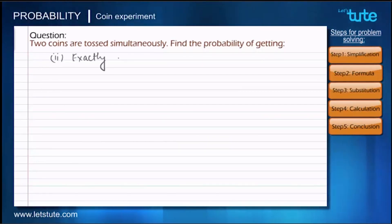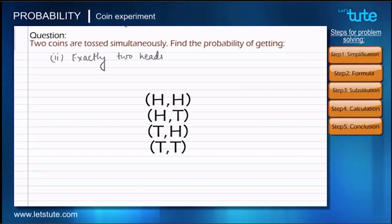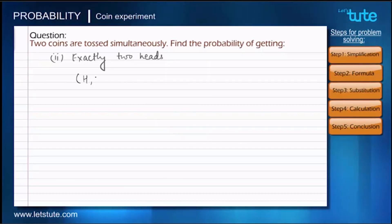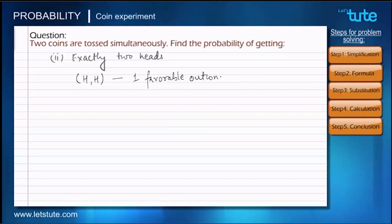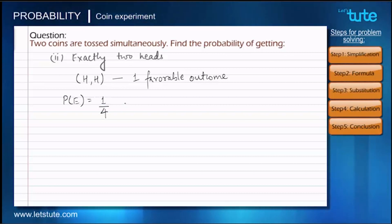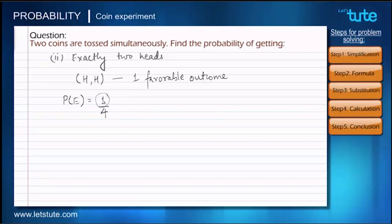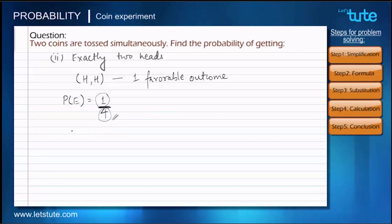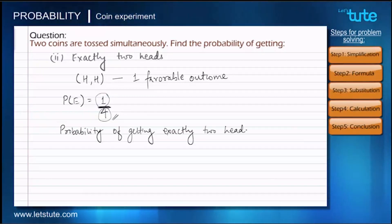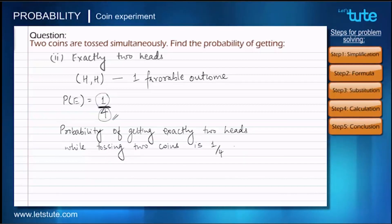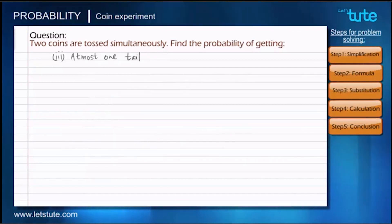The second sub-question is to find the probability of getting exactly two heads. Out of the four possible outcomes, only the first outcome has exactly two heads, giving us one favorable outcome. Applying the formula, we get 1 upon 4. There is no further simplification, so we conclude: the probability of getting exactly two heads while tossing two coins is 1/4.